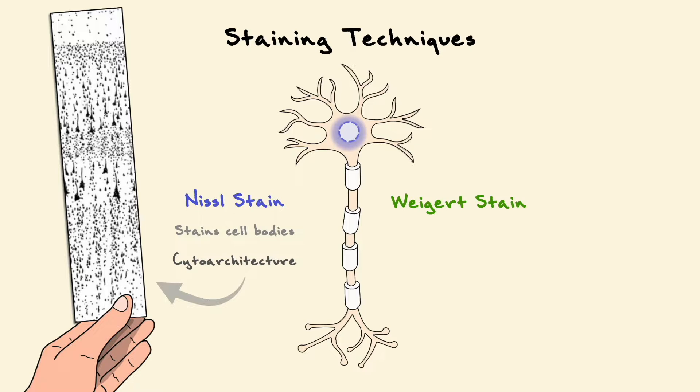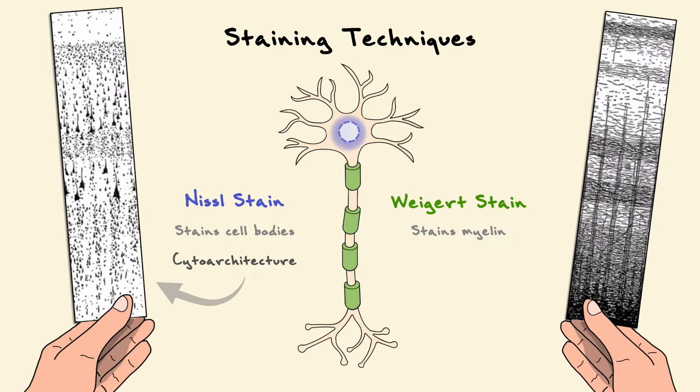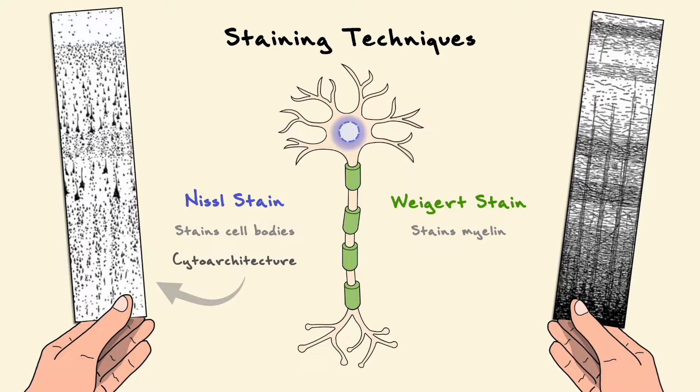The second important staining technique, the Weigert stain, developed by Karl Weigert, stains myelin sheaths and as a result, it allows to visualize white matter projections in the cortex. The study of the different white matter projections is also known as myeloarchitecture.